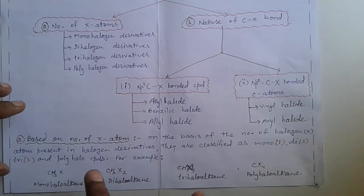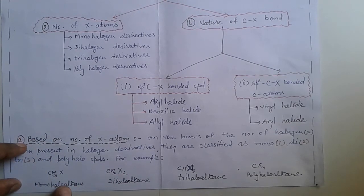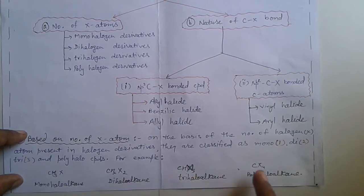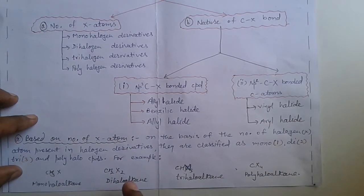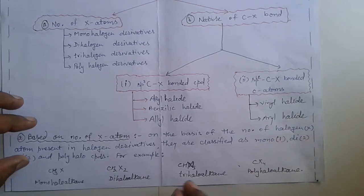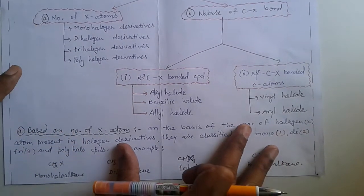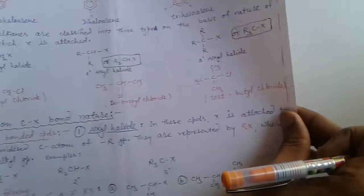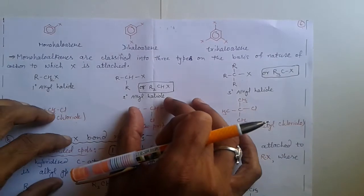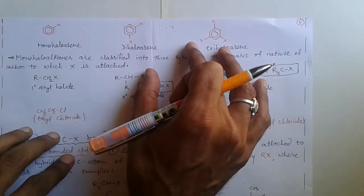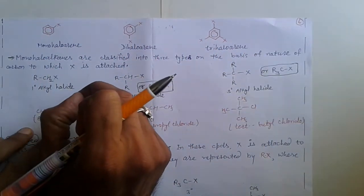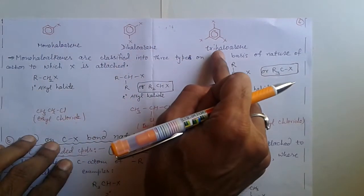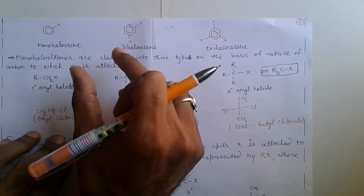After removing one hydrogen atom from alkane, monohalo alkane is formed. Similarly, after removing two, three, and four hydrogen atoms from alkane, di, tri, and tetrahalo alkanes are formed. In aromatic hydrocarbons, after removing one, two, and three hydrogen atoms, mono, di, and tri halogen derivative compounds are formed.